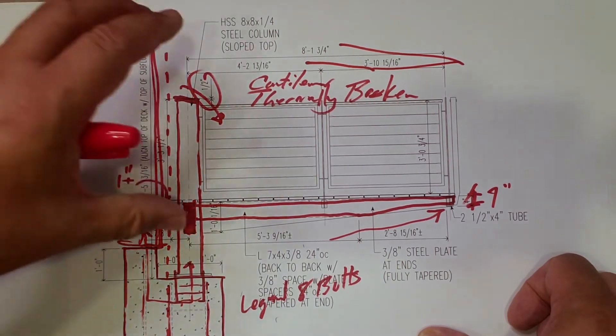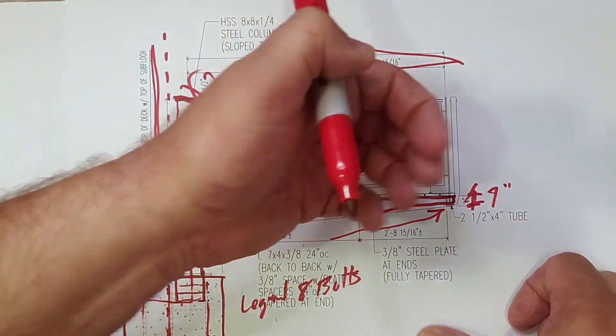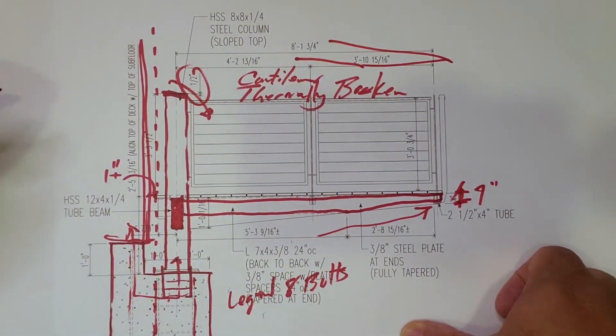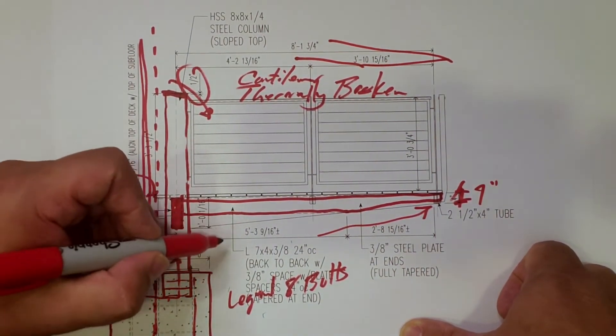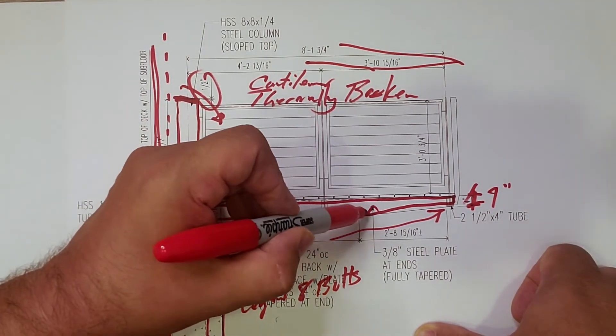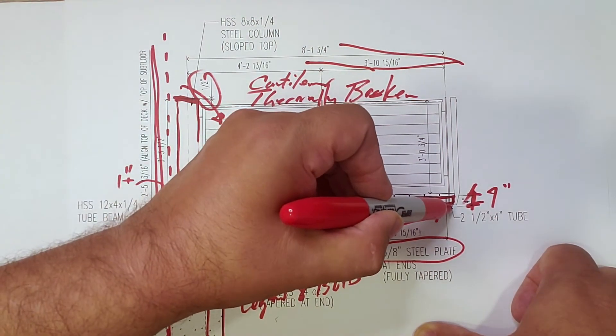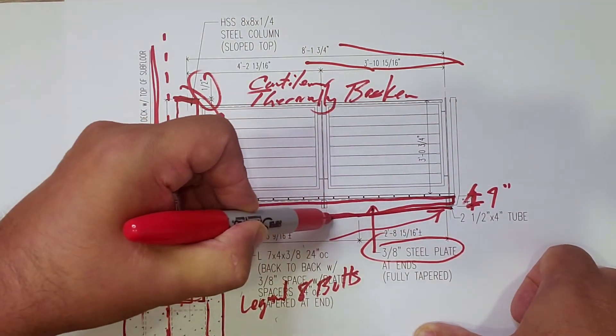To give us that kind of building, disintegrating into the air, off into the view, right? And then we have basically a piece of plate steel, 3/8 inch plate steel, that is at the end, and that emphasizes the taper.